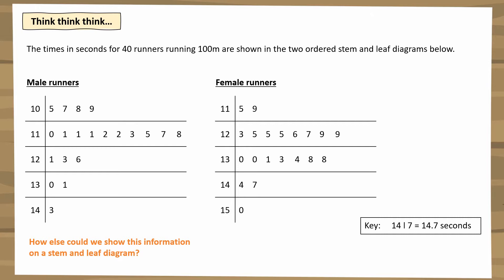Just like we have single bar charts and dual bar charts — where two bars are drawn side by side or on top of each other, color-coded to represent male and female or other categories — we can do something similar with stem and leaf diagrams.